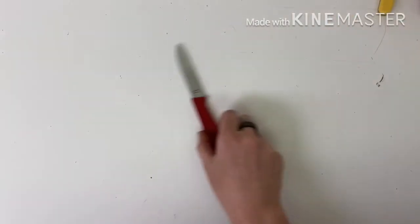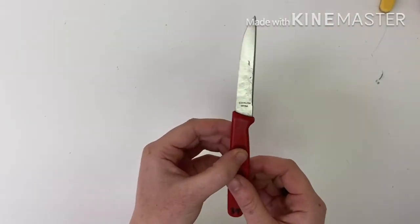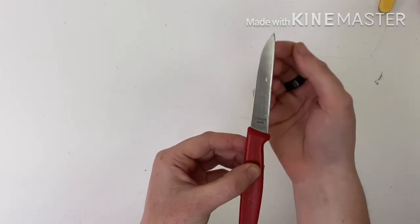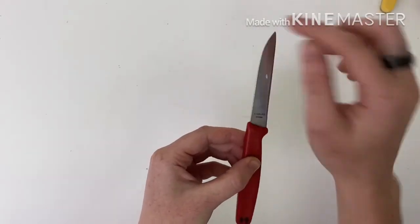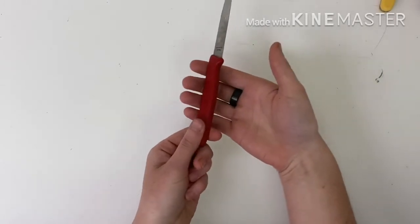We're going to use the knife that will be on your stations. You'll notice the knife has two sides - the straight side is the sharp side, this curved side is dull.